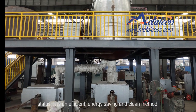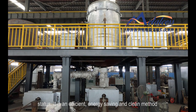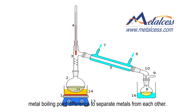metal distillation purifies desired matter through changing its physical status. It is an efficient, energy-saving, and clean method for matter separation and purification. Just like water distillation, metal distillation uses metal boiling point differences to separate matters from each other.